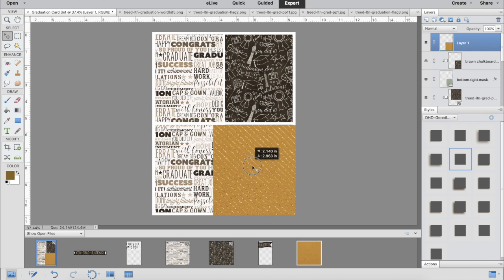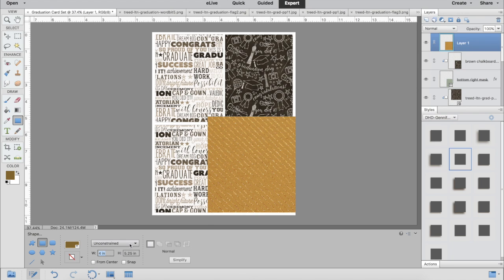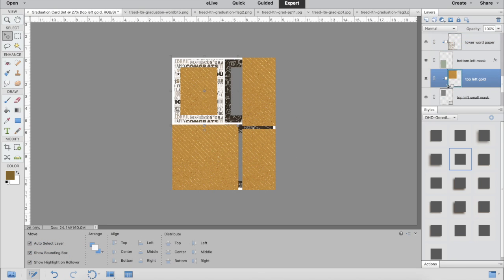I'm taking this gold paper that has diagonal shimmery stripes, and I'm going to create another rectangular clipping mask that leaves about an inch around each side.